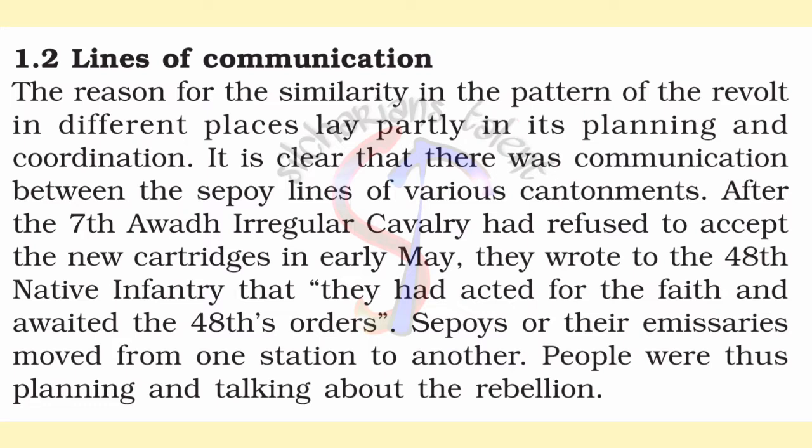The next subtopic is Lines of Communication. We know that the revolt took place at different places at the same time, and there was similarity in the pattern of the revolt. The reason behind this was planning and coordination. Sepoys or their agents moved from one station to another for planning and discussing the rebellion. In early May, the 7th Irregular Cavalry refused to use the new cartridges and wrote to the 48th Native Infantry about this incident, awaiting their orders.